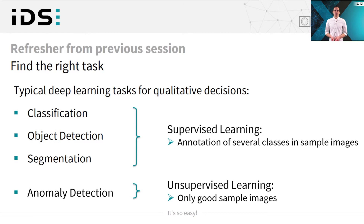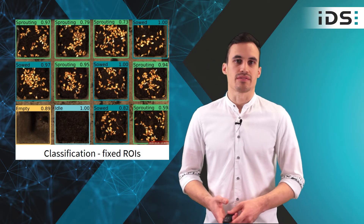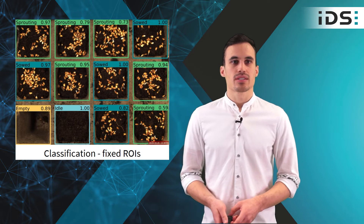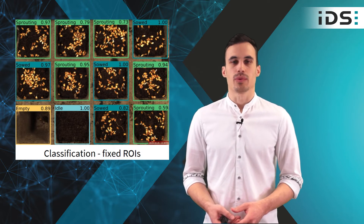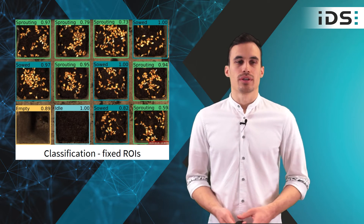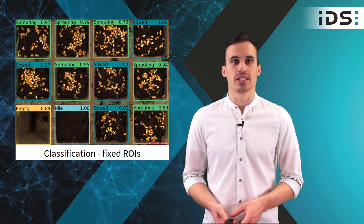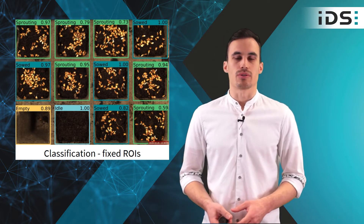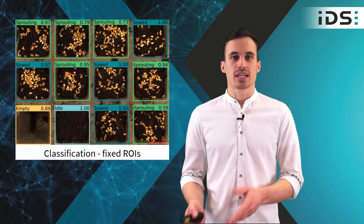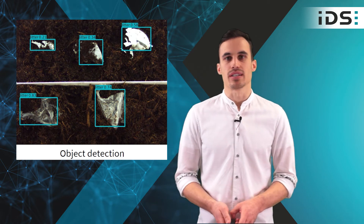Now I will show you two sample use cases that we already can solve with IDS Next. The first one is classification. In this case, we have fixed multiple RRIs and can analyze or inspect the growth status of cress — differentiating if it's sourd or already sprouting. The second one is object detection, where we can find litter and soil.